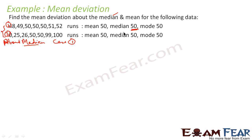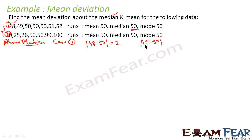To find mean deviation about median, we first get the median, which is 50 here. Then we find the distance between each data point and the median. For example, the distance between 48 and 50 is mod of 48 minus 50, which equals 2. We take the modulus because distance is always positive.